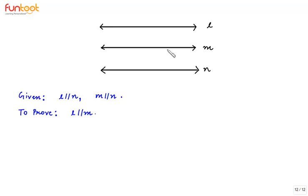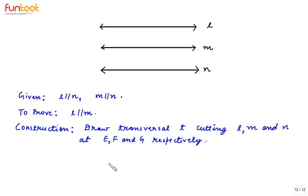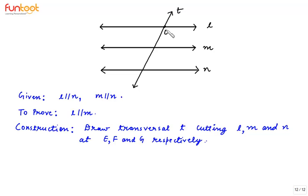In this proof we are given that L is parallel to N and M is parallel to N, and we have to prove that L is parallel to M. Let's perform a construction: draw transversal T cutting L, M, and N at points E, F, and G respectively. So here is our transversal T cutting L at E, M at F, and N at G. Let's start the proof.